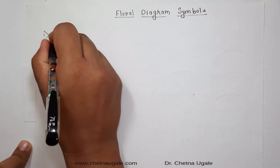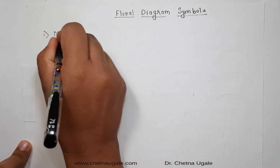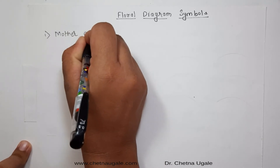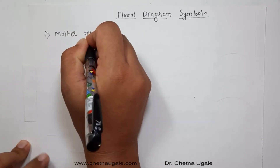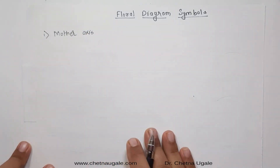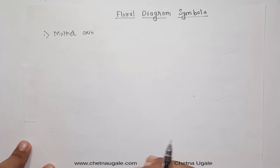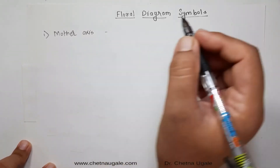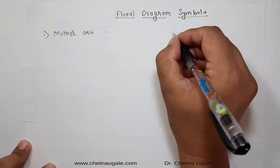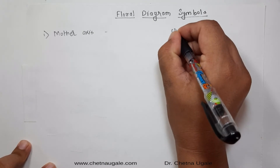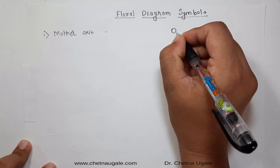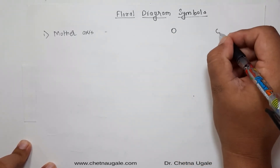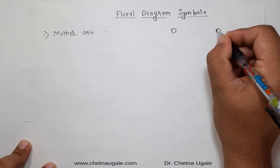The first one is the mother axis. The mother axis is the main branch on which the flowers are present, and this mother axis is represented by either an open circle or a filled circle, which is generally present on the posterior side of the floral diagram.